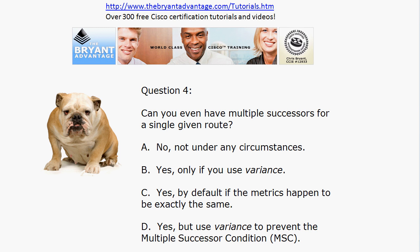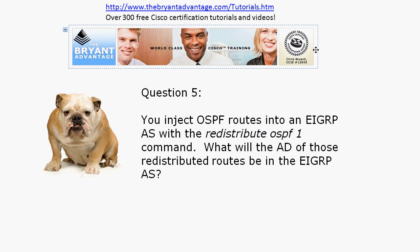Pause the video if you need a few extra seconds, but we'll move to question five so we have plenty of time on the live equipment. You've injected OSPF routes into an EIGRP autonomous system with the redistribute OSPF 1 command. What will the administrative distance be once those routes are redistributed into EIGRP? We better know what that AD is and what it does.